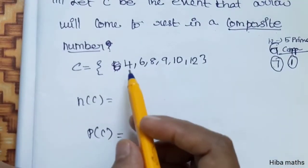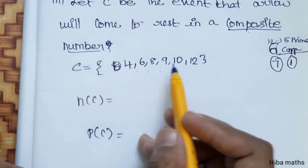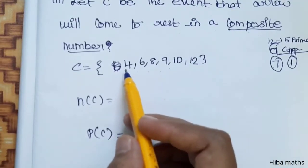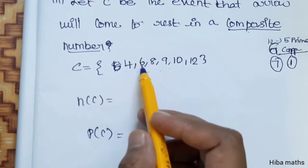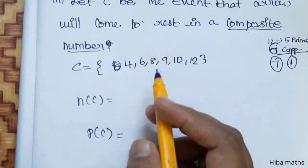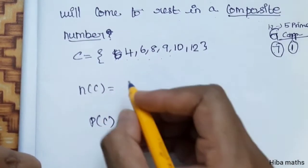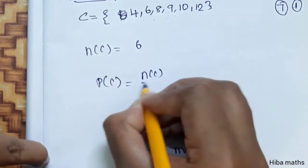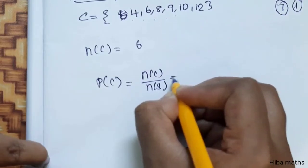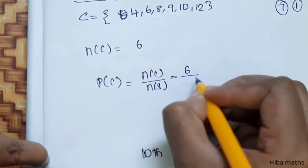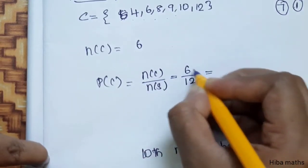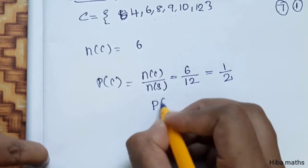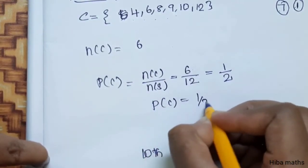The composite numbers from 1 to 12 are 4, 6, 8, 9, 10, and 12 — these all have more than one factor. So, n of C equals 6. P of C equals n of C divided by n of S, which is 6 by 12. Simplifying, P of C equals 1/2.